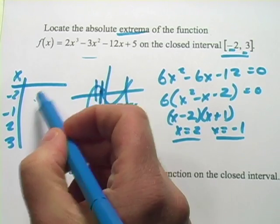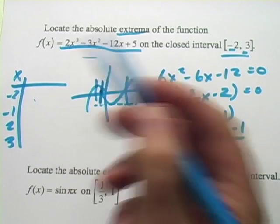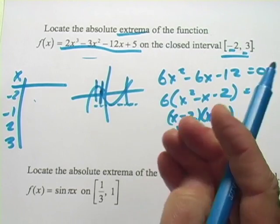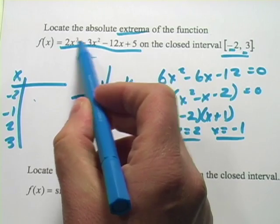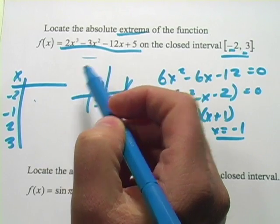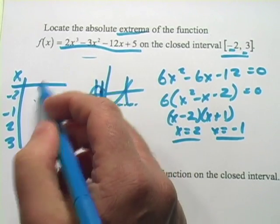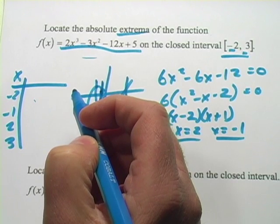What you want to do is plug them all into the original function and see which are the high points and which are the low points. Sometimes the math gets a little painful when you have high powers and so forth, but hopefully that won't be too difficult here. Let's see what we've got.